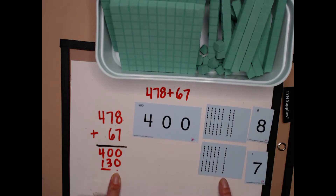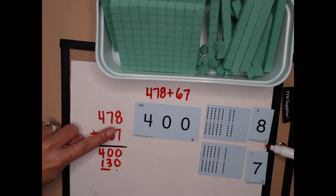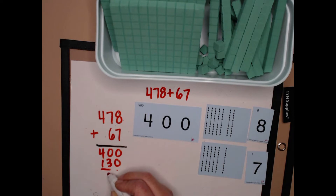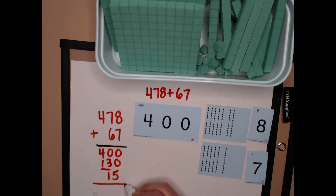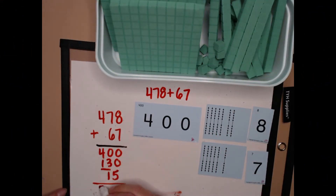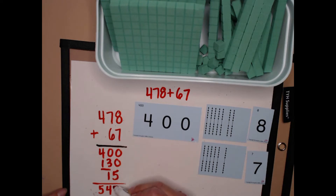One hundred thirty. Next I have eight ones plus seven ones, which I know is fifteen ones. Now I can add all that I have. I could say four hundred plus one hundred equals five hundred. Three tens plus one ten equals four tens. And zero plus zero plus five equals five.